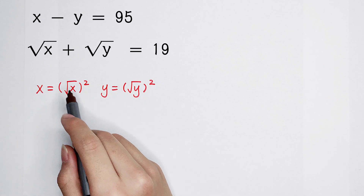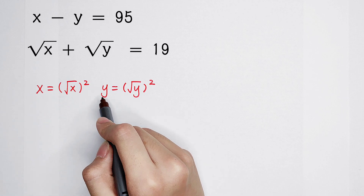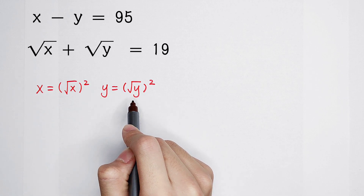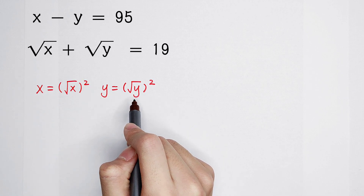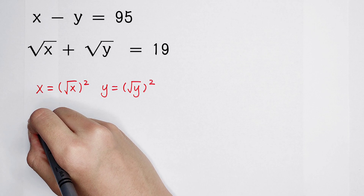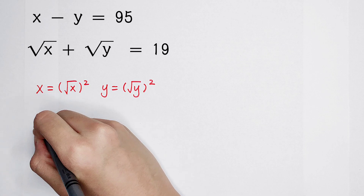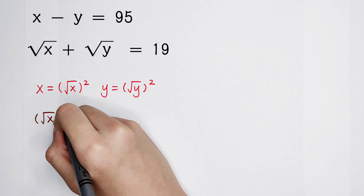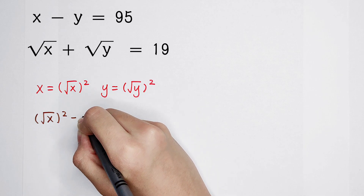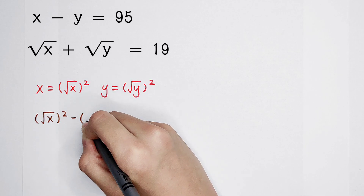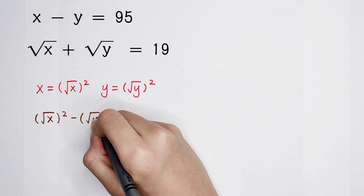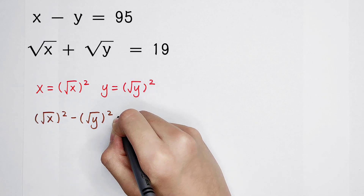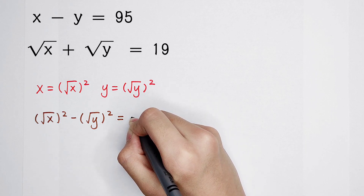So because x equals this and y equals this, the first equation x minus y can be rewritten as: square root of x, then squared, minus square root of y, then squared, equals 95.